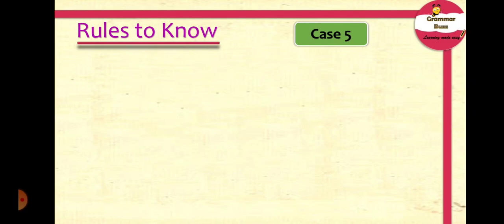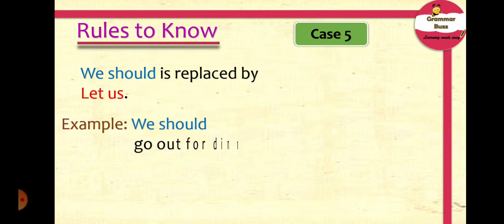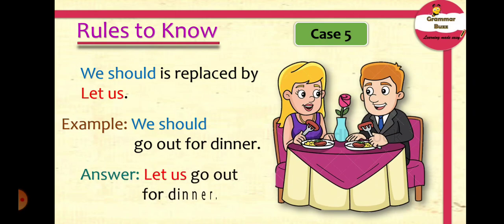Case 5: 'We should' is replaced by 'let us.' Example: 'We should go out for dinner.' Replacing 'we should' with 'let us,' the sentence becomes 'Let us go out for dinner,' and we remember to close the sentence with a full stop.